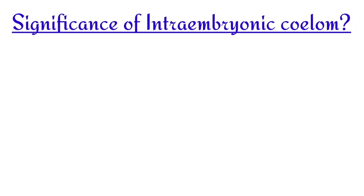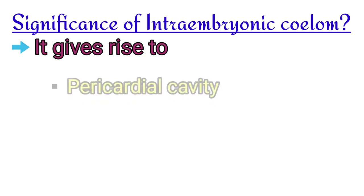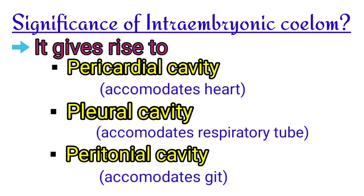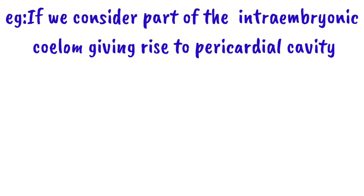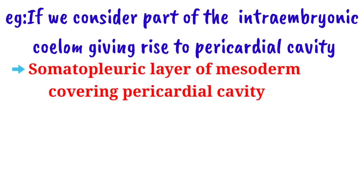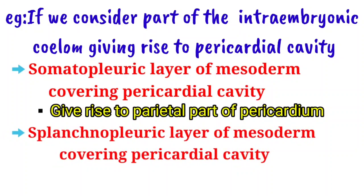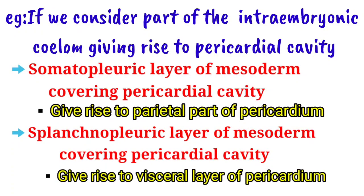The intraembryonic coelom gives rise to the pericardial, pleural, and peritoneal cavities accompanying the heart, respiratory tube, and GIT respectively. For example, in the part giving rise to the pericardial cavity, the somatopleuric mesoderm forms the parietal layer of the pericardium and the splanchnopleuric mesoderm forms the visceral layer of the pericardium.